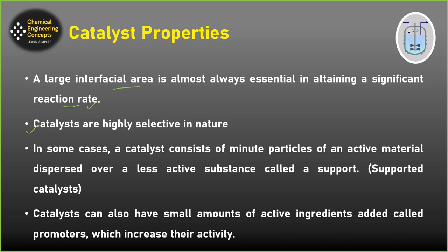The amount of catalyst actually controls the reaction rate, so we must know about the selectivity of catalyst as well. In some cases, a catalyst consists of minute particles of active material dispersed over a less active substance — this active material is called a support, and these types of catalysts are known as supported catalysts. Catalysts can also have small amounts of active ingredients called promoters, which increase the activity of a catalyst.